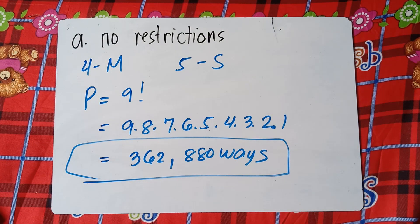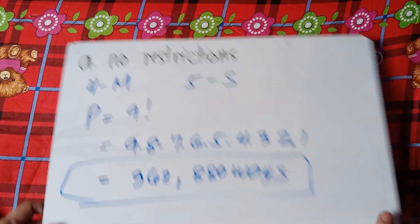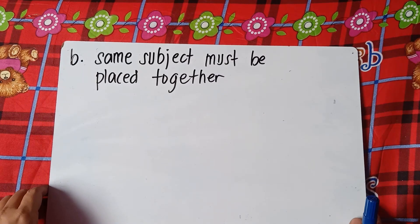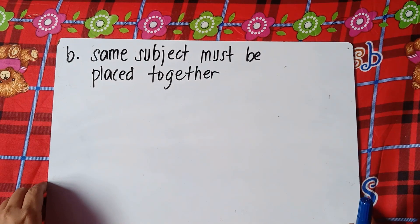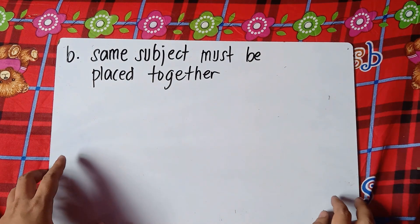For no restrictions, just simply add the total number of books. So let's have Letter B. In Letter B, the question is: same subject must be placed together.